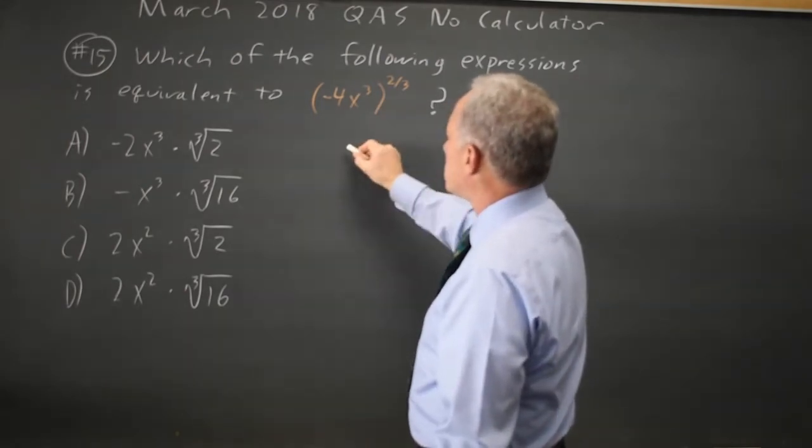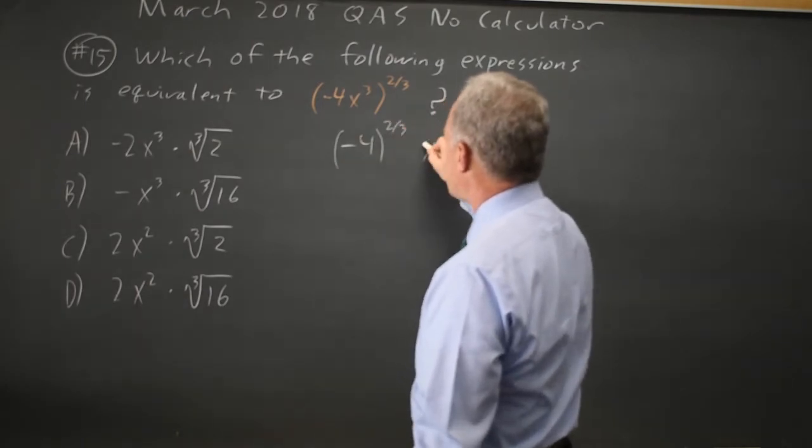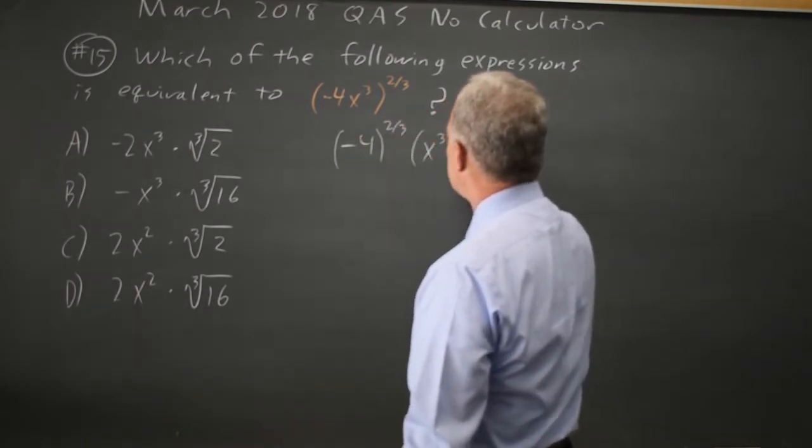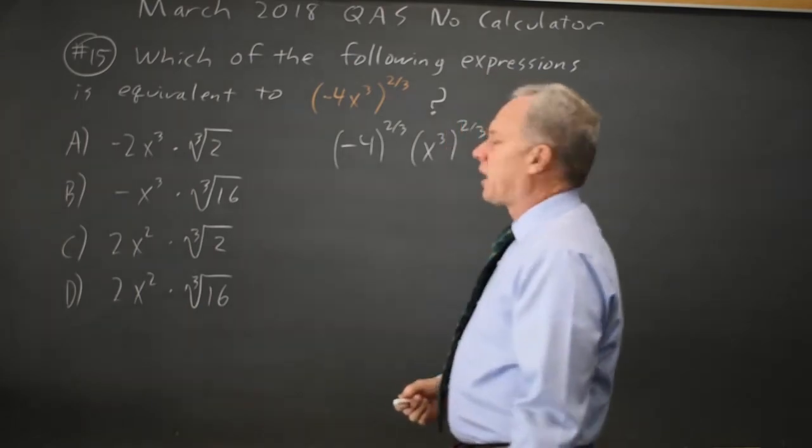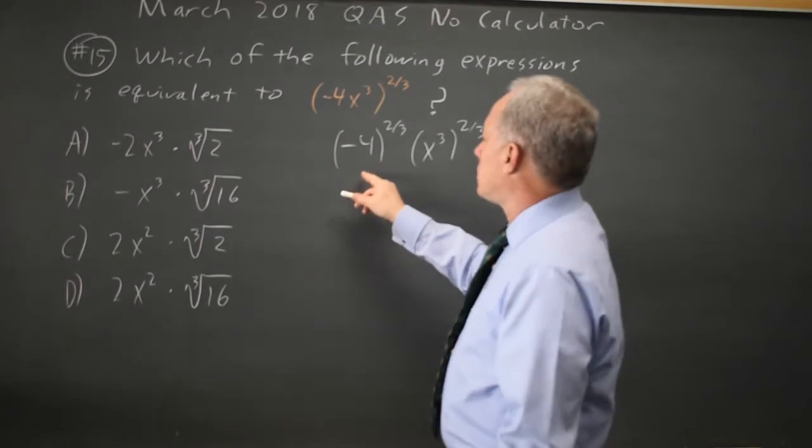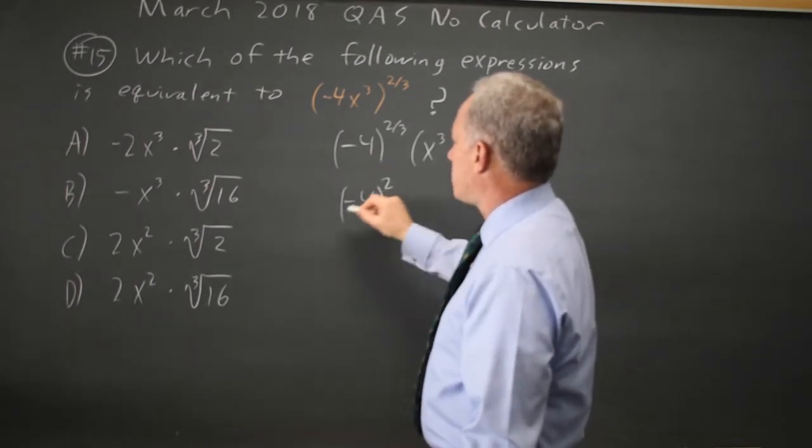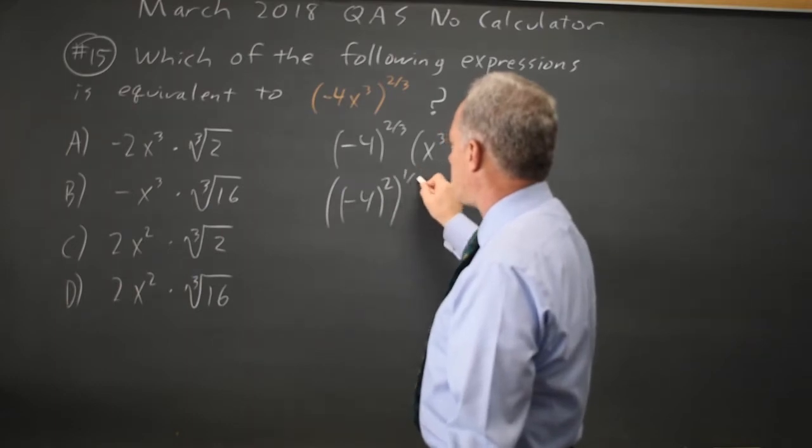So using my exponent rules this is negative 4 to the 2 thirds times x cubed to the 2 thirds. And with the constant I'm going to square it first. So this is negative 4 squared and that expression to the 1 third.